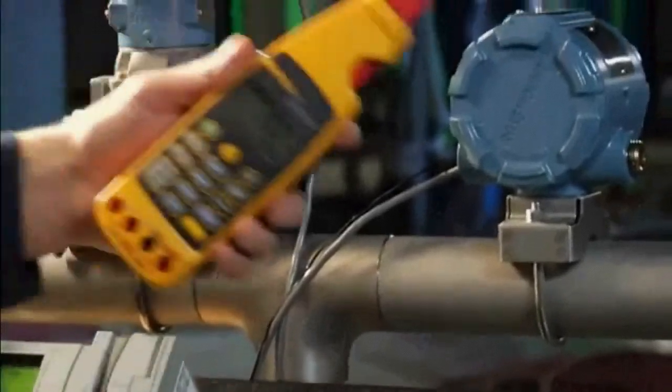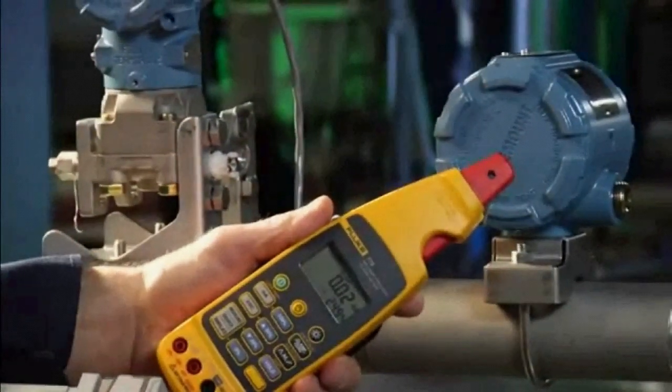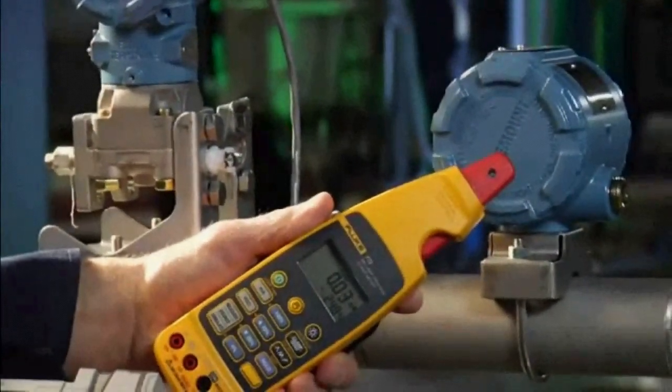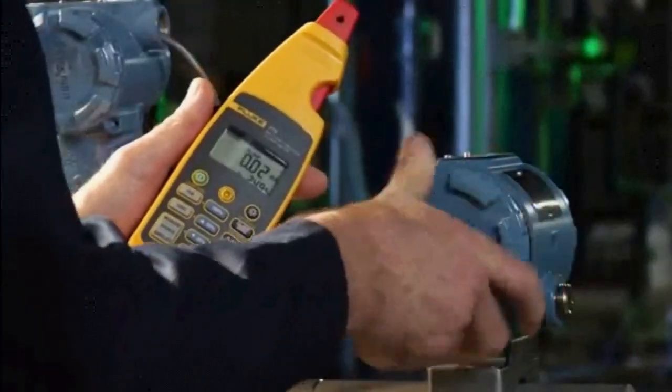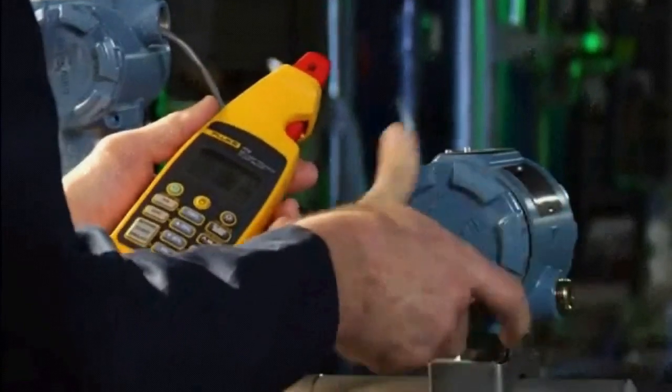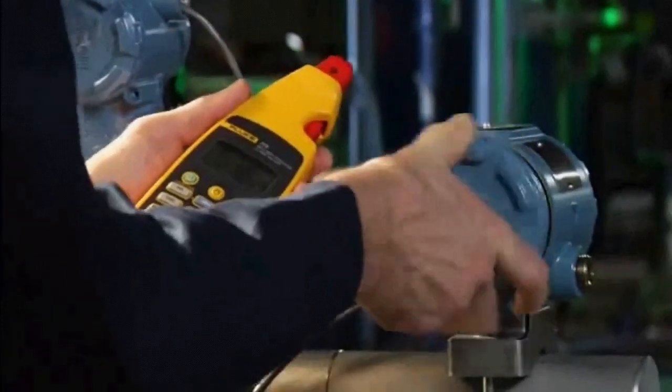Once the bad signal is found, you can then use the milliamp loop troubleshooting capabilities of the 773 to isolate the fault. To troubleshoot the loop, you need to access the signal wires. Remove the cover on the transmitter and find the signal wires.